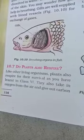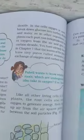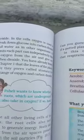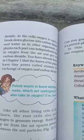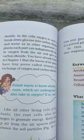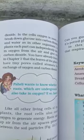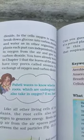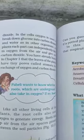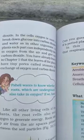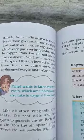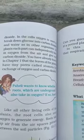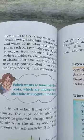Like other living organisms, plants also respire for survival, as learned in class seven. They also take in oxygen from air and give out carbon dioxide. In the cells, oxygen is used to break down glucose into carbon dioxide and water, as in other organisms. Each part of a plant can independently take in oxygen from the air and give out carbon dioxide.